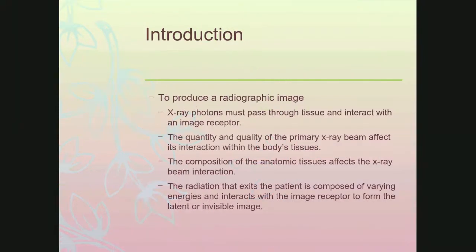When we start talking about the radiographic image, realize that you have to have some photons pass through the tissue and actually interact with the IR, or the image receptor. The amount and quality of that primary beam will absolutely affect its interaction within the body's tissue — not only how many photons, but the energy of those photons determines if it's going to pass through, be absorbed, or scatter. The composition of the part you're passing through will affect how the x-ray beam interacts as well.